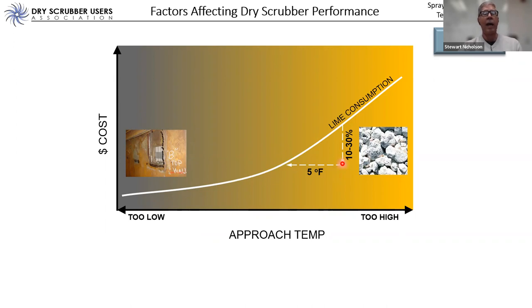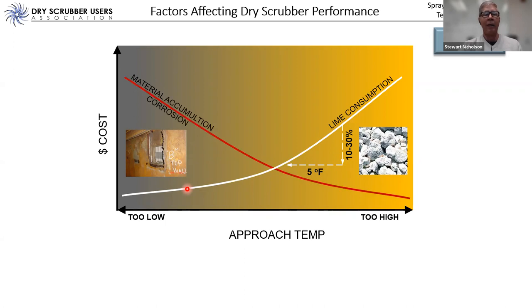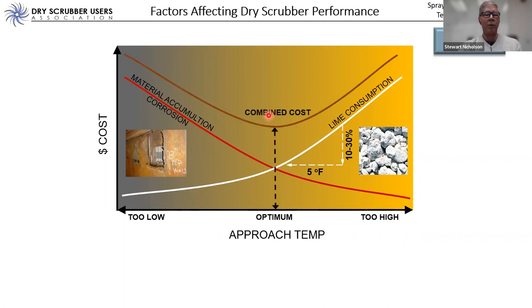When we're spending a couple million dollars a year on lime, being able to affect that number by 10 to 30 percent simply by controlling approach temperature is a powerful concept. But why not just keep lowering the approach temperature? As we get closer and closer to the dew point, efficiency improves — but bad things start to happen. Material accumulation and corrosion increase. The optimal approach temperature is where the savings from lower approach temperature are offset by the costs of material accumulation and corrosion.